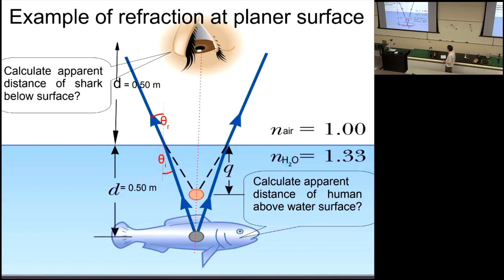Here's a practical illustration: I'm at the ocean looking down at a shark, and the shark is looking up at me. The refractive index of air is essentially 1 and water is 1.33. I'm half a meter above the surface and the shark is half a meter below. How close does each of us appear to the other? We'll use the image position equation twice — once from the person's perspective, once from the shark's.